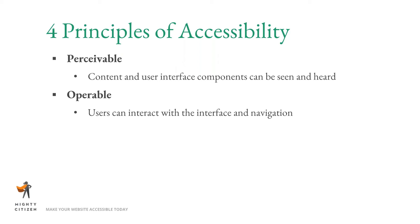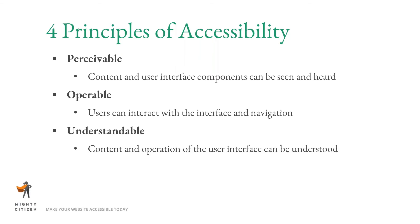The third principle is understandable — the content and operation of the user interface must be understood. People need to understand how to use your website and what you're writing on it. This is where users with cognitive, emotional, or mental impairments come in. You also need to consider reading level — in the United States, the average reading level is eighth grade, so overly complex writing excludes a number of people.